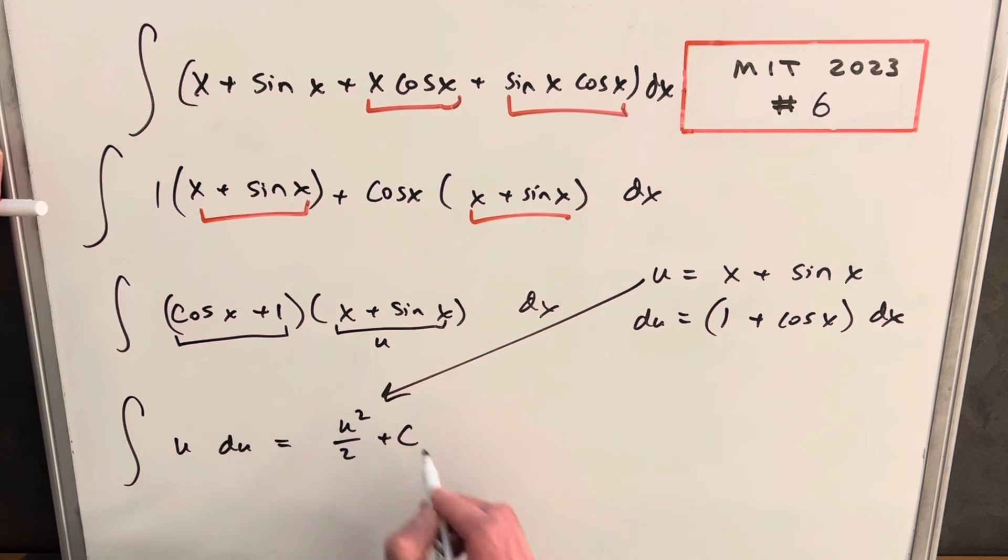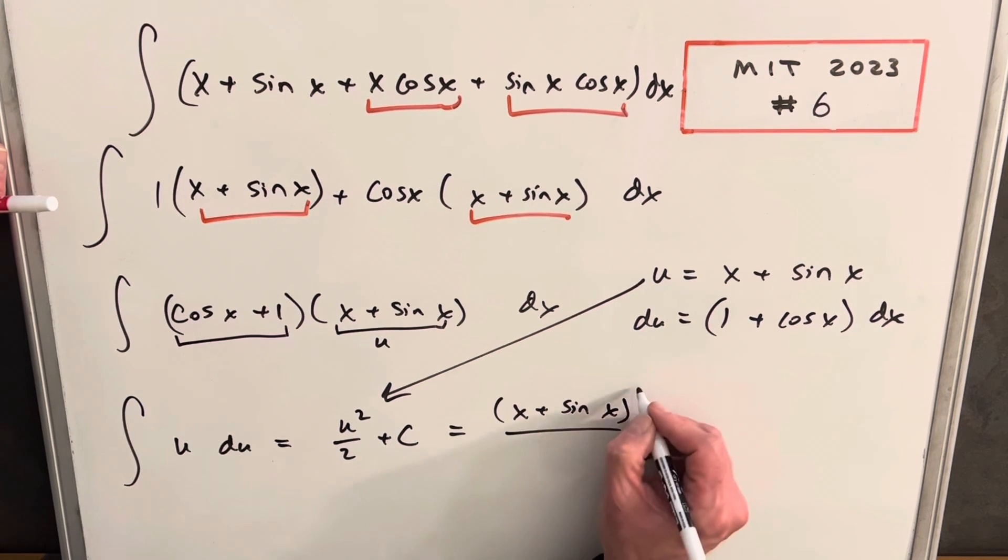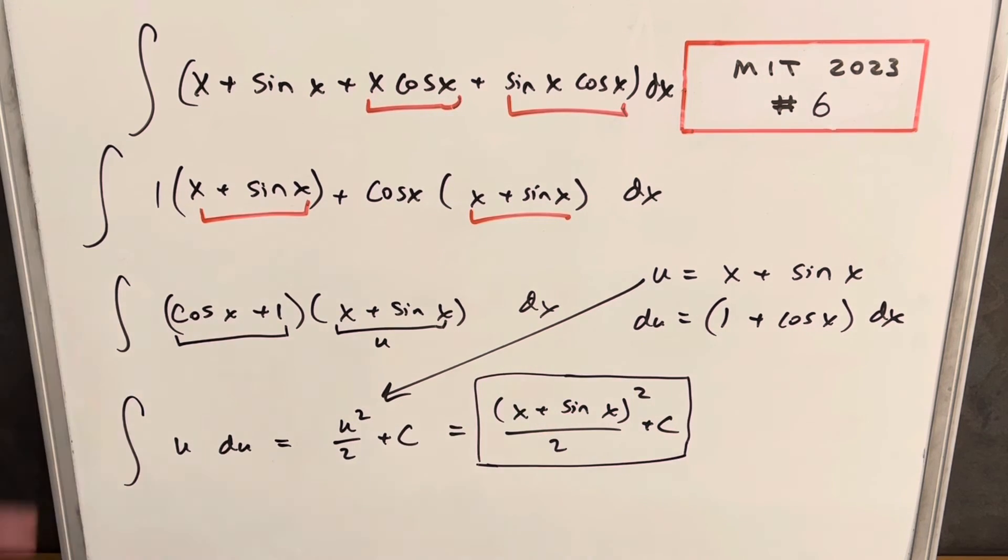We'll back substitute here. And we're left with x plus sine x all squared over two plus c. If you do happen to do this out the long way, I think you'll get a little different looking answer.